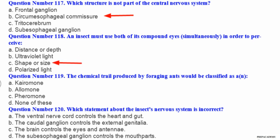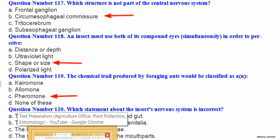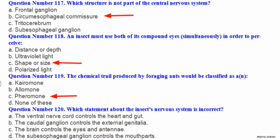Question number 119. The chemical trail produced by foraging ants would be classified as: A kairomone, B allomone, C pheromone, D none of these. Question number 120. Which statement about the insect's nervous system is incorrect? A the ventral nerve cord controls the heart and gut, B the caudal ganglion controls the external genitalia, C the brain controls the eyes and antennae, D the subesophageal ganglion controls the mouth parts.